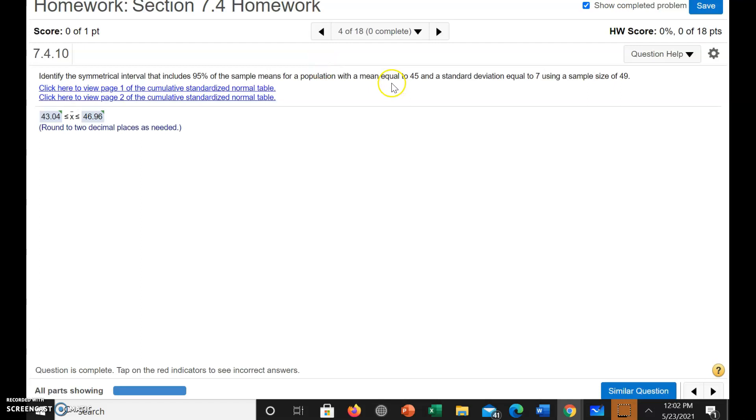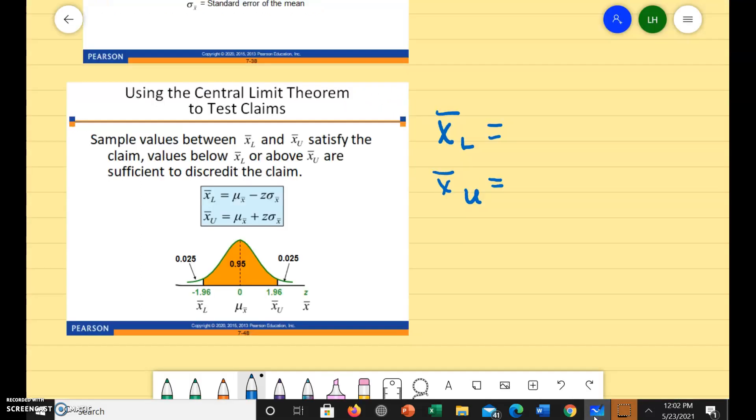Well, the mean of the sample means is going to be the same as the population mean, because the sample size is greater than or equal to 30, because our sample size is 49. So 45 is our number.